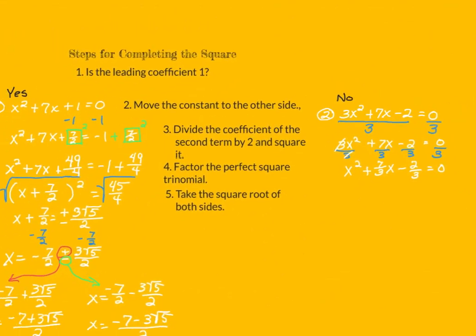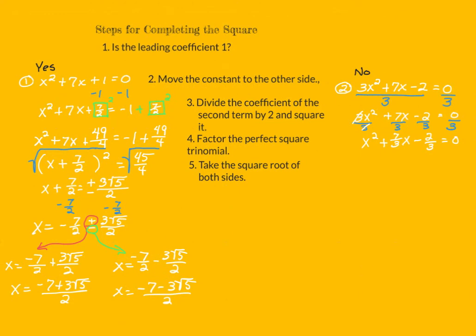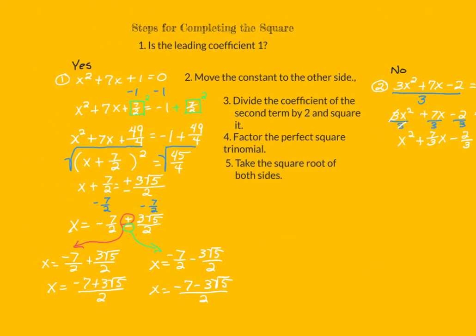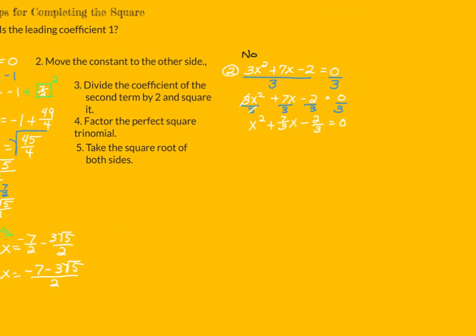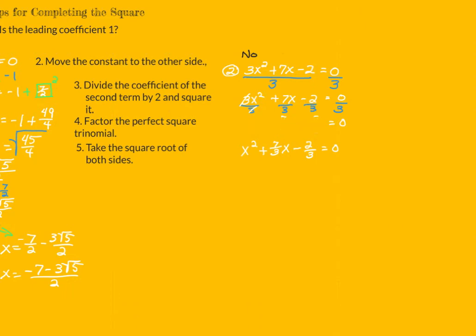Remember, when we first started, we asked ourselves: is the leading coefficient equal to 1? Our first answer was yes, so we jumped right into moving the constant to the other side. But for our second problem, we had to divide both sides of the equation by the leading coefficient. When we divide that 3 by 3, we get a coefficient of 1, and at that point we move right into the same process we've already been doing.